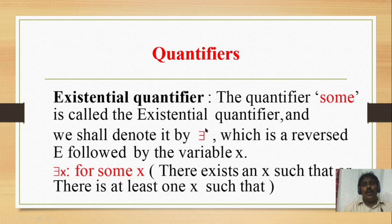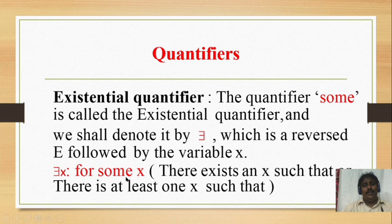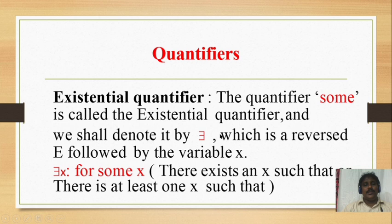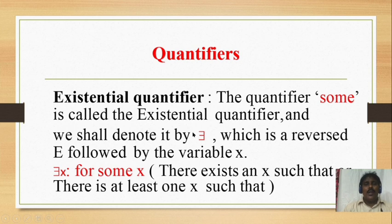The existential quantifier means 'there exists.' The quantifier 'some' is called the existential quantifier, and we denote it by the symbol ∃ — a reversed E — followed by a variable x. So 'there exists x' means 'for some x,' or 'there exists at least one x such that.' This is called the existential quantifier.